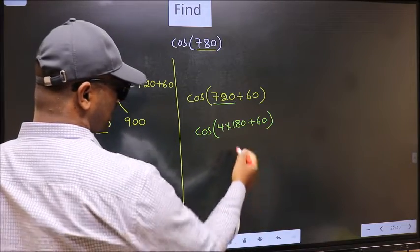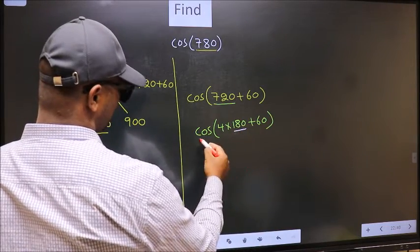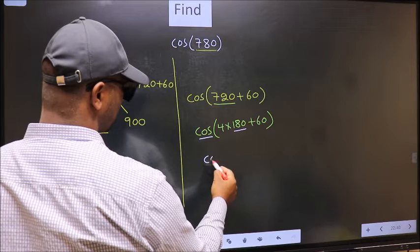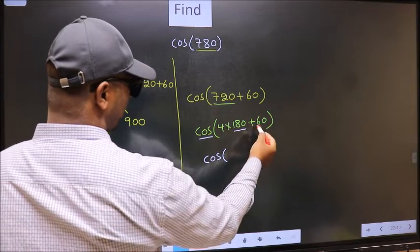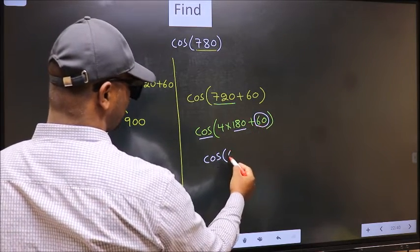Next, here we have 180, so cos is not going to change. It will remain cos, and inside we get this angle 60.